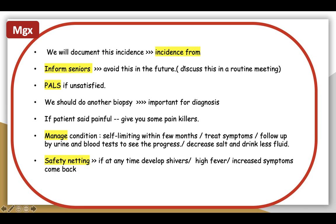Inform the patient about the incident form — we will document this problem and put it inside the patient's file. Inform the senior. There will also be a routine meeting that happens for each department inside the hospital where these types of errors are discussed. You can mention to the patient that we have a routine meeting held every month or every week, where we discuss all medical errors and problems to identify what the reason was and take further steps to prevent this from happening again.